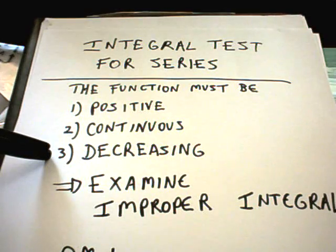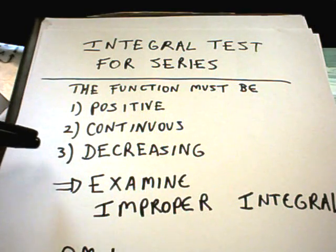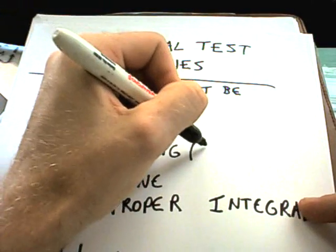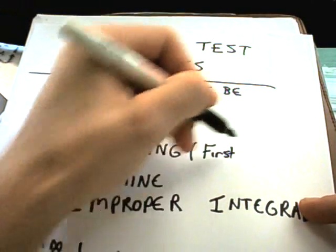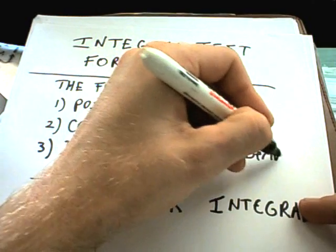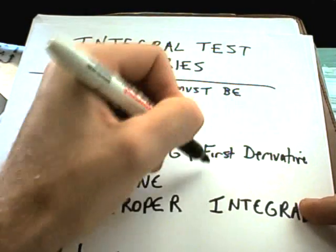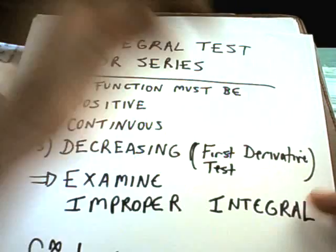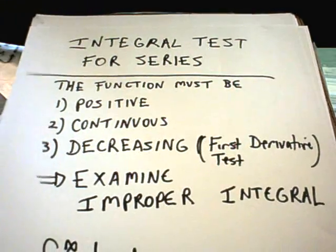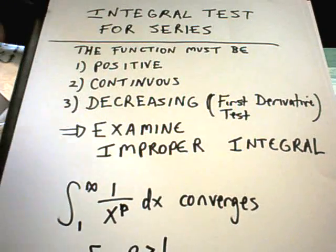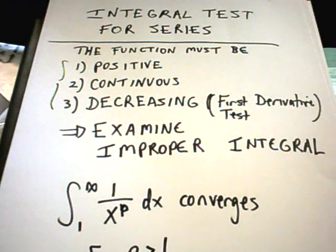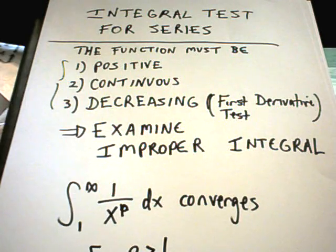Usually on exams, they do want you to justify that the function is decreasing — sometimes that's pretty obvious, sometimes it's not obvious at all. To show that something is decreasing, you can use the first derivative test. I'll definitely do some examples where I use the first derivative test to show the function is decreasing, so these problems can turn a little long.